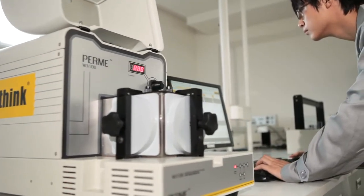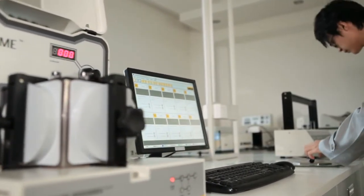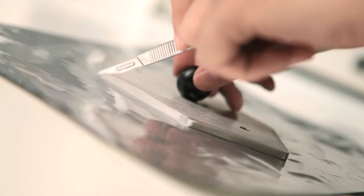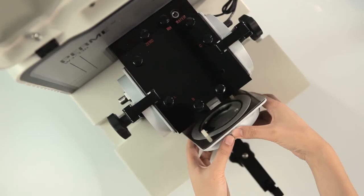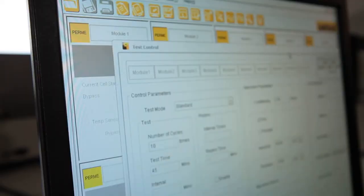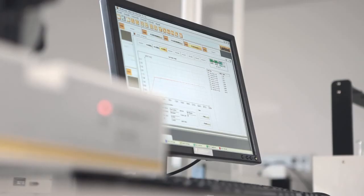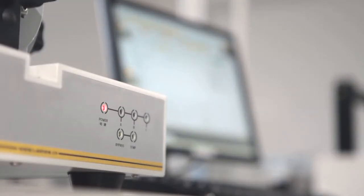Operating the instrument is simple and convenient. Users only need to place the prepared specimen into the test chamber, complete the parameter setting and click on test. The W3330 will then accomplish the test automatically.